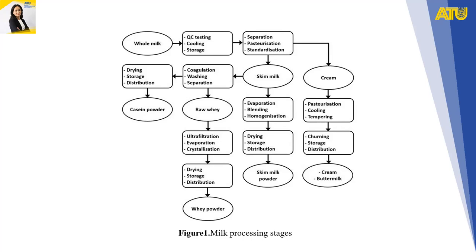Operators confirm product characteristics via lab testing and adjust as required. This method is uncommon in modern dairies unless the product requires additional ingredients. Homogenization breaks down fat globules to prevent the formation of a cream layer. Homogenization forces hot milk at high pressure through a narrow gap, breaking up the fat globules so they cannot recombine later.